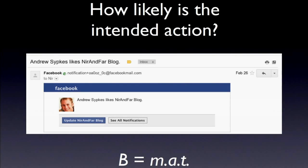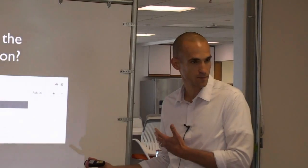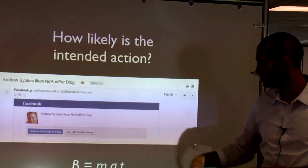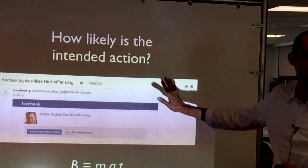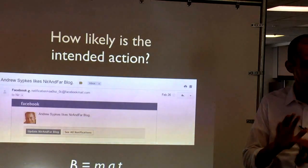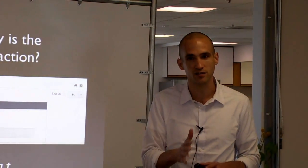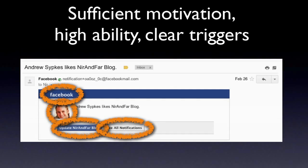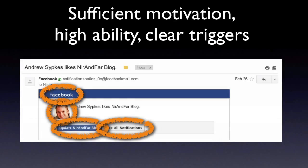Here's an email I get when someone likes my blog. How is Facebook using B equals MAT? The behavior they want is for me to click and go to Facebook. They've used language that increases motivation — 'Andrew Sipke likes your blog' — we've got social acceptance. For ability, there's all this white space, very low cognitive load, a very clean simple experience. One reason Facebook beat MySpace is that it's a simpler, easier-to-understand experience. And then triggers are all over the place, including the hero button telling me exactly what to do.